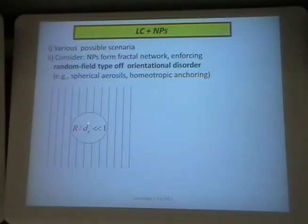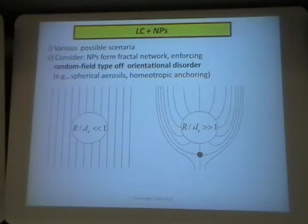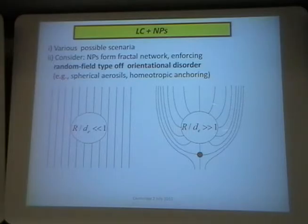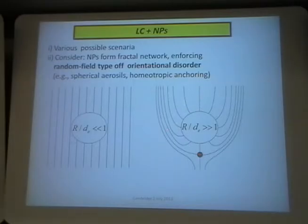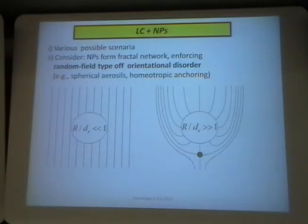What determines the domain size? The main actors are the elastic energy, which would like to eliminate spatial variation and make large domains, and the nanoparticles, which randomly impose different orientations and would like to create small domains. These two forces make a compromise and define a finite size of domains. Let us repeat the scaling argument used for confinement. What is different here is that we have nanoparticles — many surfaces — and we introduce the concentration of nanoparticles. Another thing is that the characteristic scale of the system is no longer a free parameter.